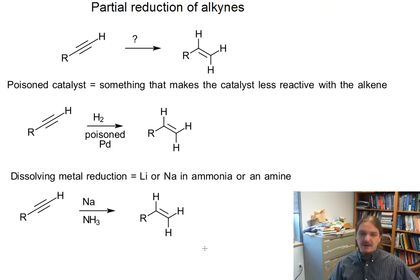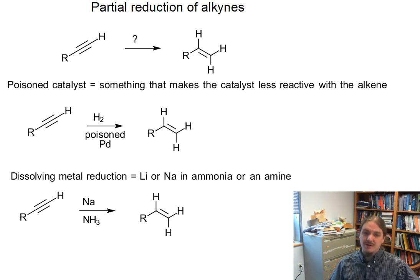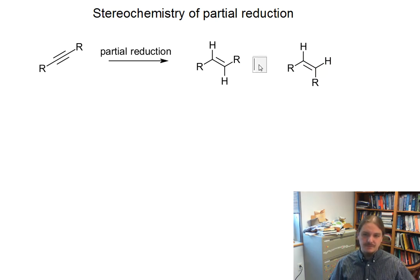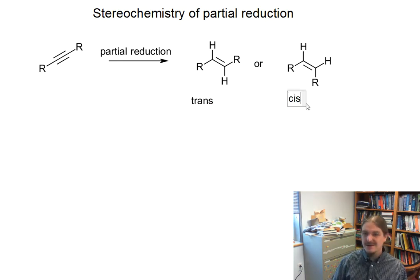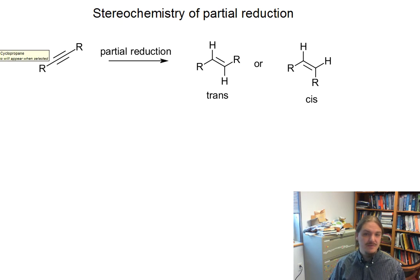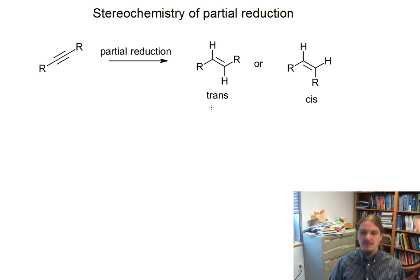Before we get there, you'll notice that I've been using a terminal alkyne, so the product doesn't have any alternative stereochemistry available. But what if we had an internal alkyne we wanted to partially reduce? Now we have a choice of the trans or the cis alkene.